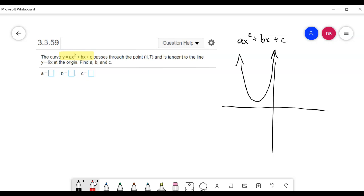Now, we know that this thing passes through the point (1, 7), and we know that it has a specific derivative. So I'm going to plot 1, 7. So let's say that that's 1, and let's say 7's up there. And is tangent to the line y equals 6x at the origin. So there's the origin, and it's tangent to that line at the origin.